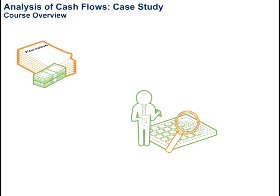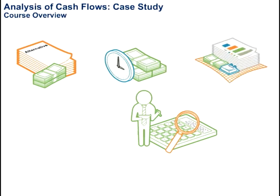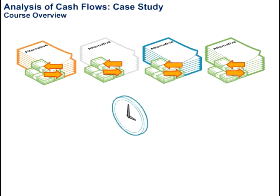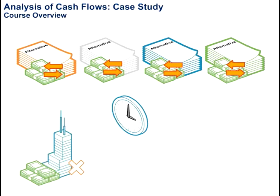Then, we will add the time value of money and net present value as ways of stripping out the implicit financing costs associated with the proposals. One of the things you will see is that different proposals have cash flows occurring at different times. It is useful to strip out all the implicit financing costs in those cash flows to make a fair comparison at time zero, since the decision must be made in the present and not in the future.